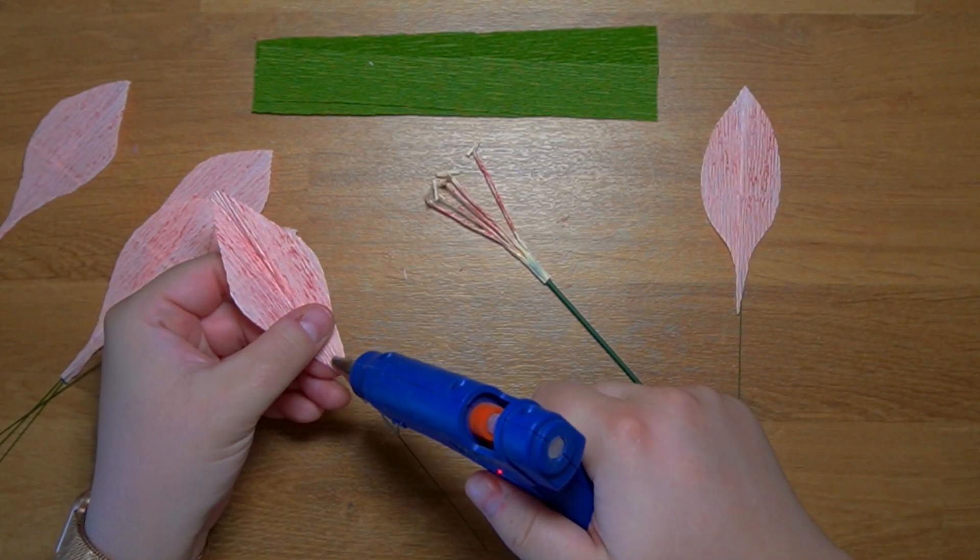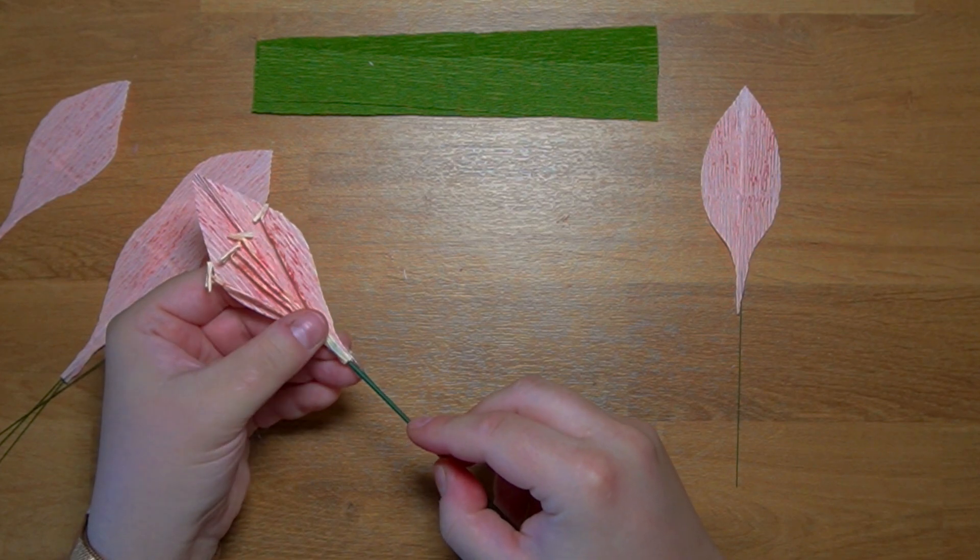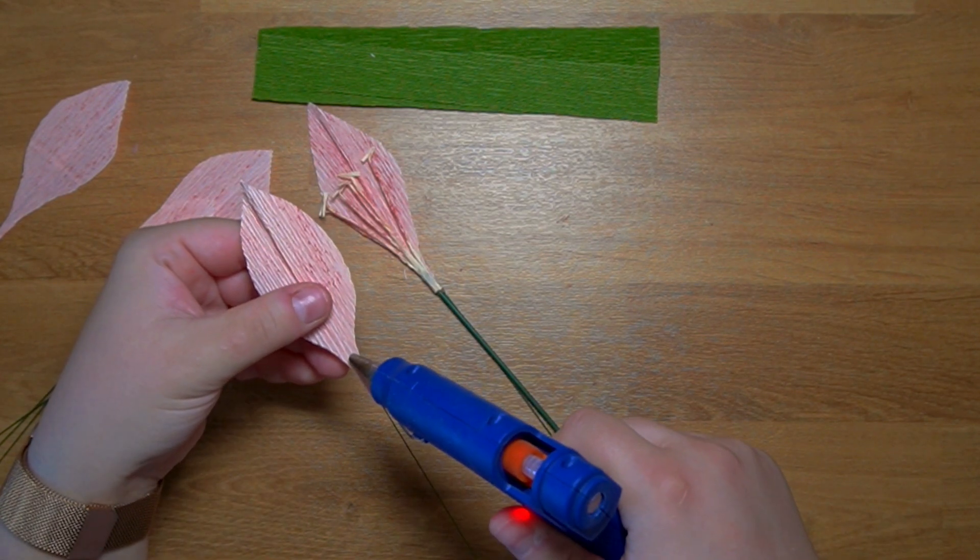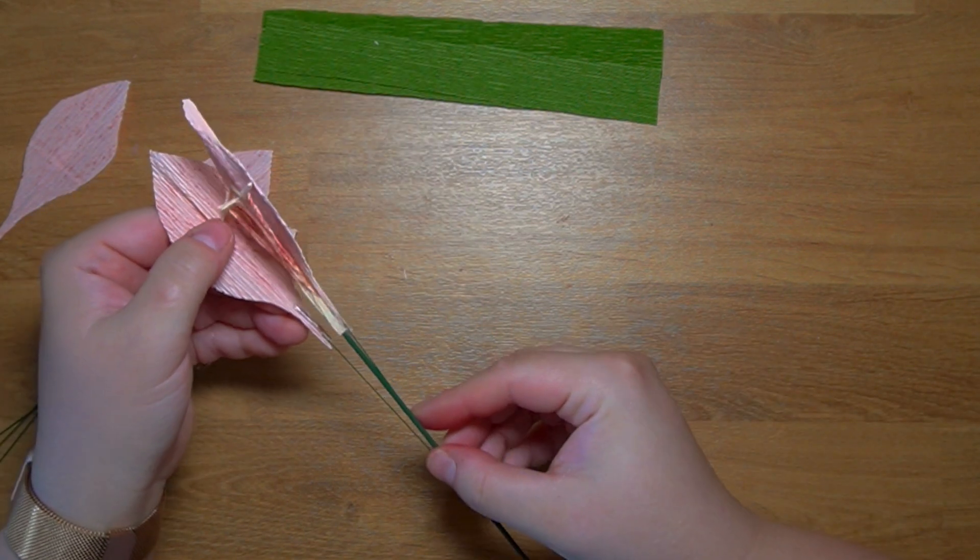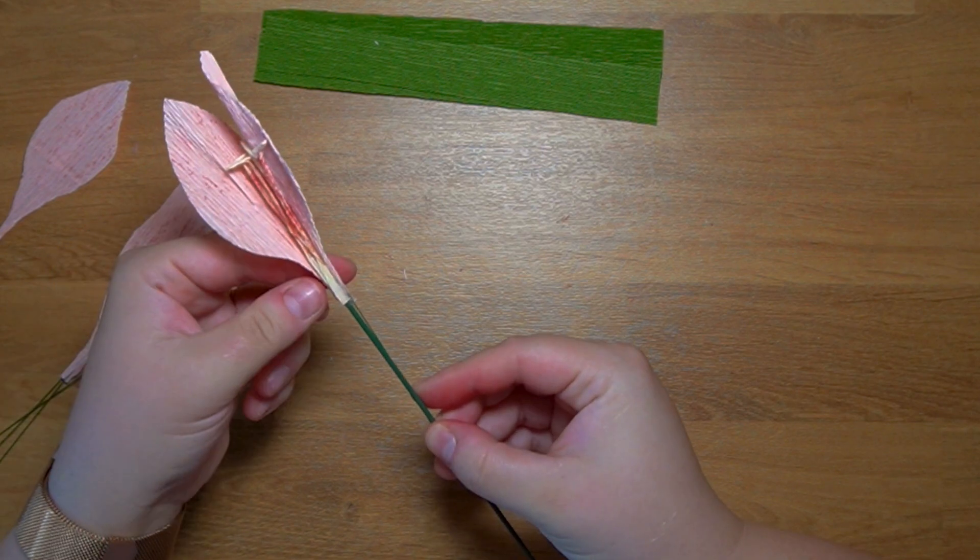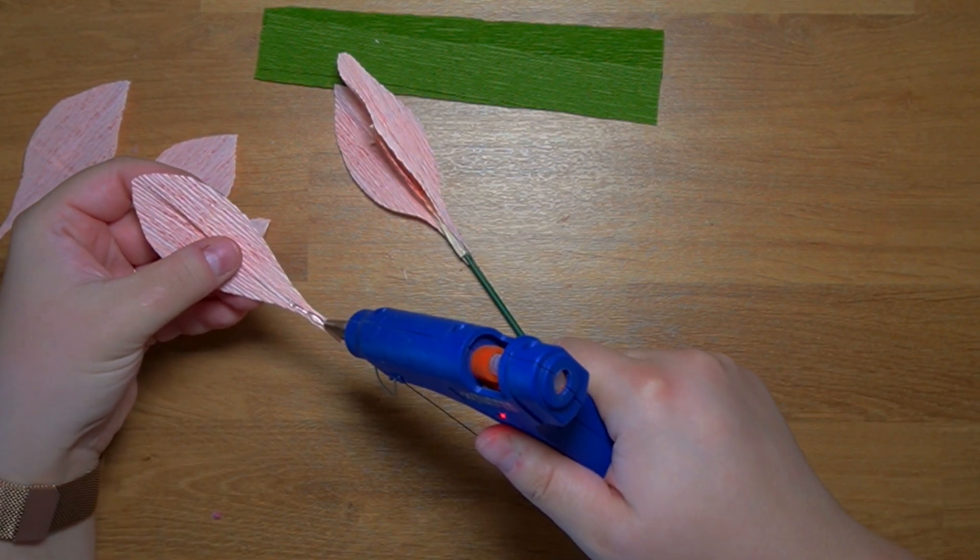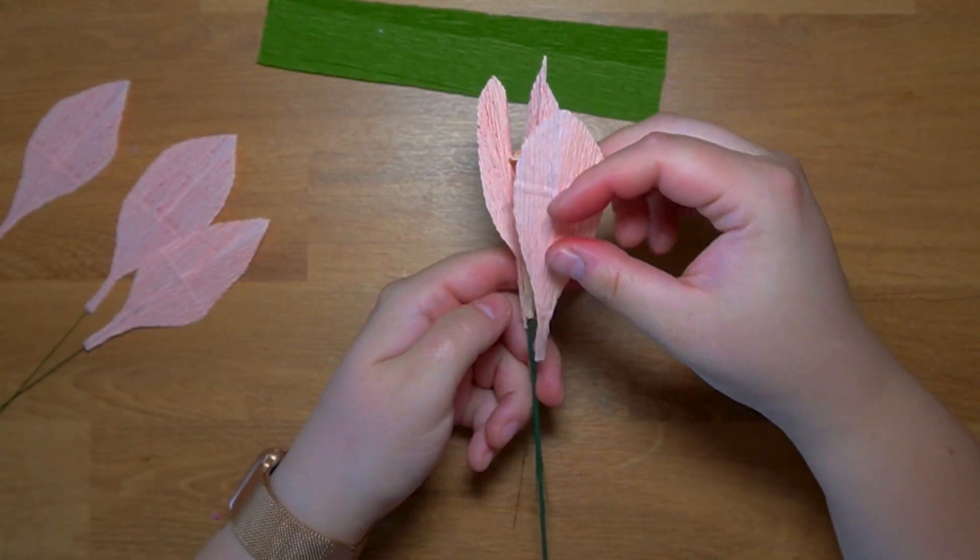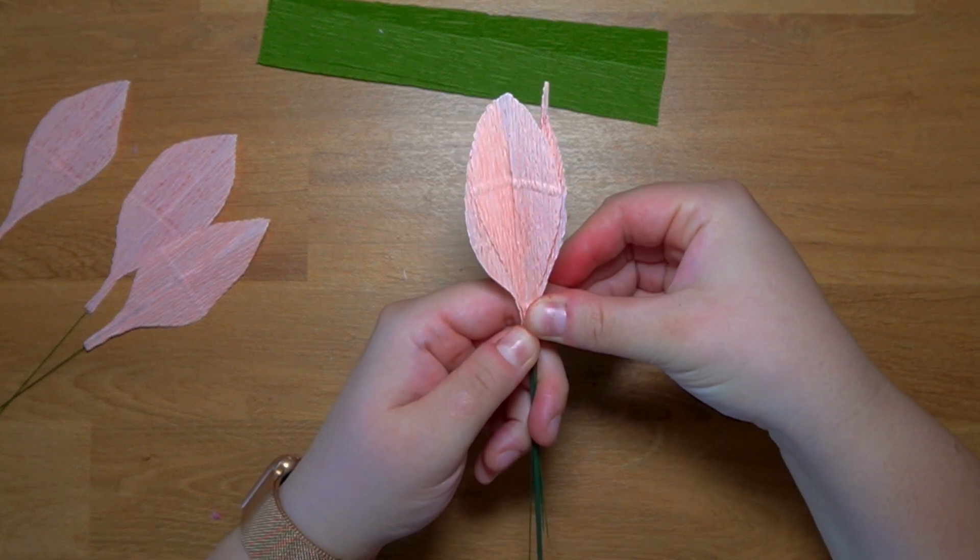And once all the six petals are glued in place on their floral wire it's time to start assembling our amaryllis. Since we have six petals we're going to have two layers each made out of three petals and for the second layer we're going to glue the petals in between two of the petals from the first layer.